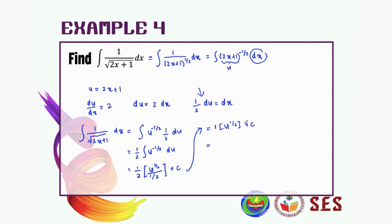Last step, don't forget to substitute it back. So u to the power of 1/2: our u is this one, so we can get (2x plus 1) to the power of 1/2 plus c, or can also be written as square root of (2x plus 1) plus c.